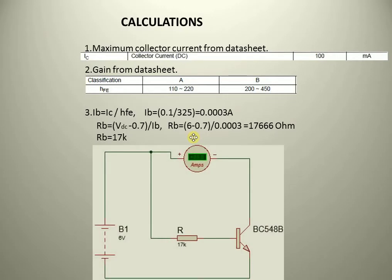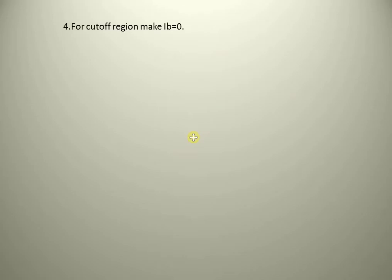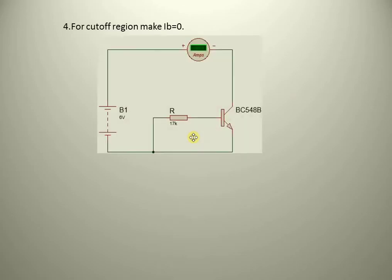As the circuit diagram shows, if I connect an ammeter across the collector point and positive of the transistor with 17K ohm resistance at the base, then the collector current will be 0.1A or 100mA. This is the saturation region operation of this transistor. For getting the cutoff region, make the base current equal to 0. This can be done by connecting the base resistance 17K ohm to the negative terminal of the battery.